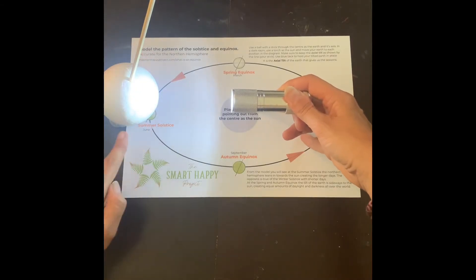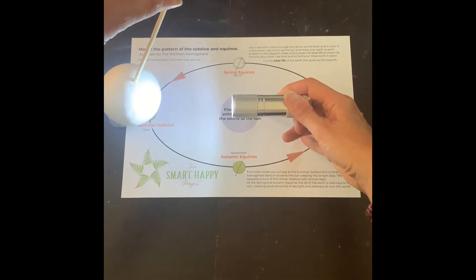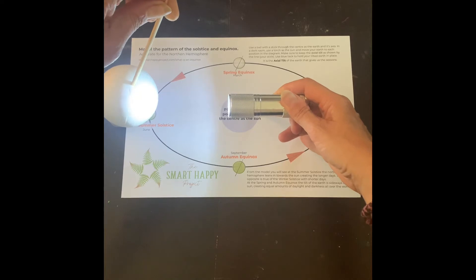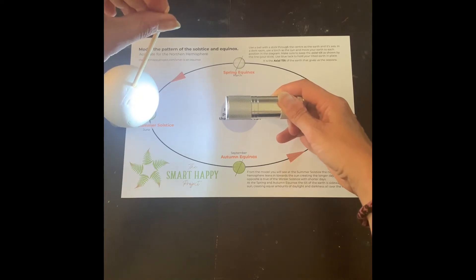And if you imagine that during the course of the day the Earth spins on its axis - it spins around and that's how we get sunrise and sunset.